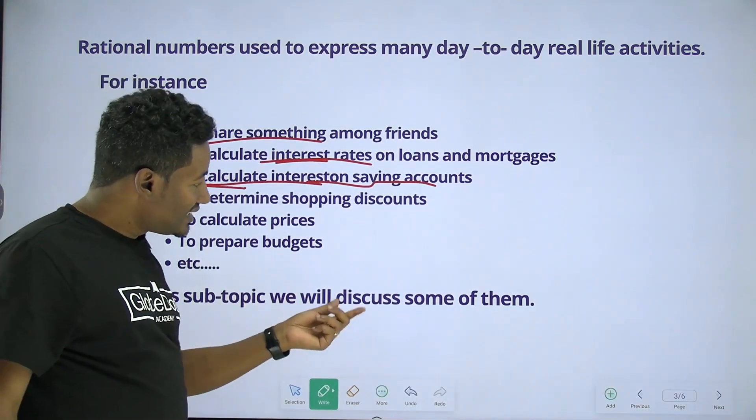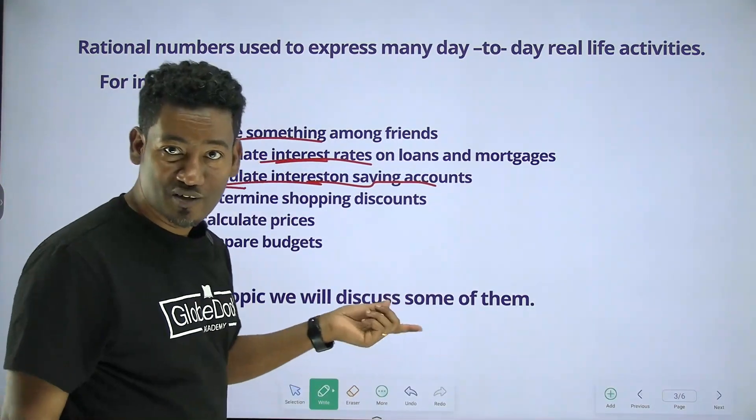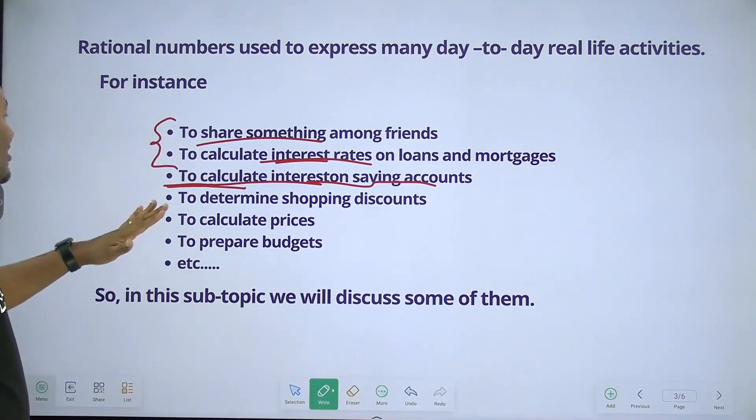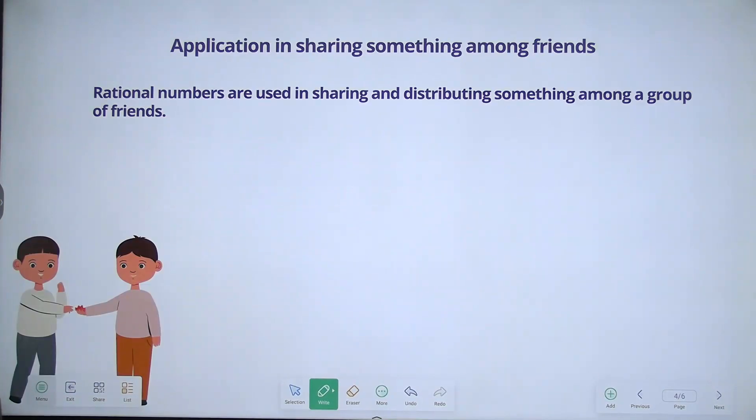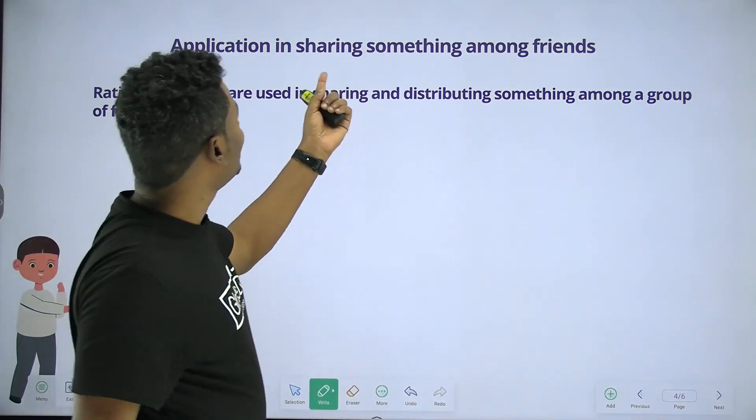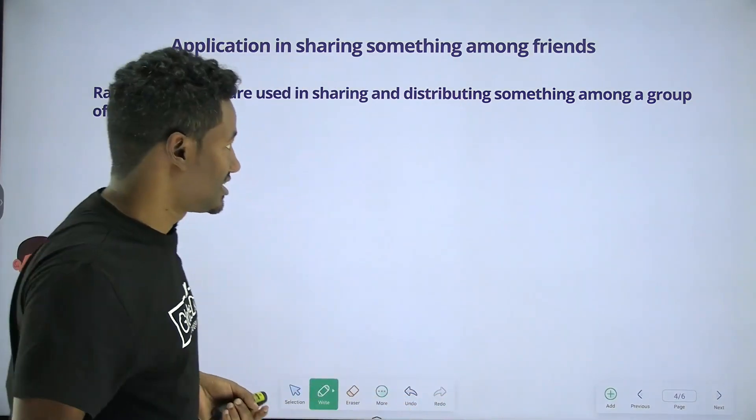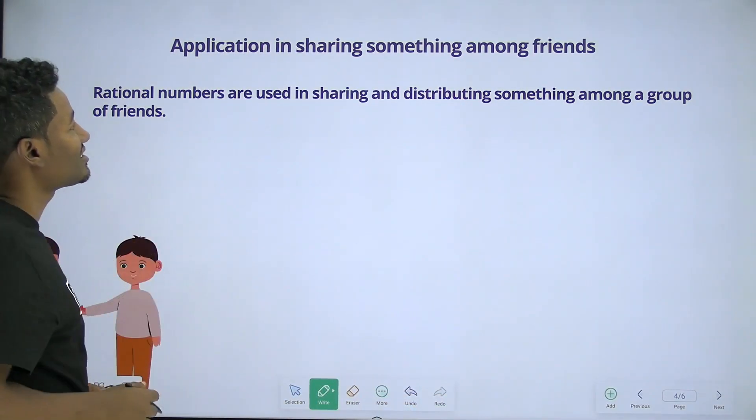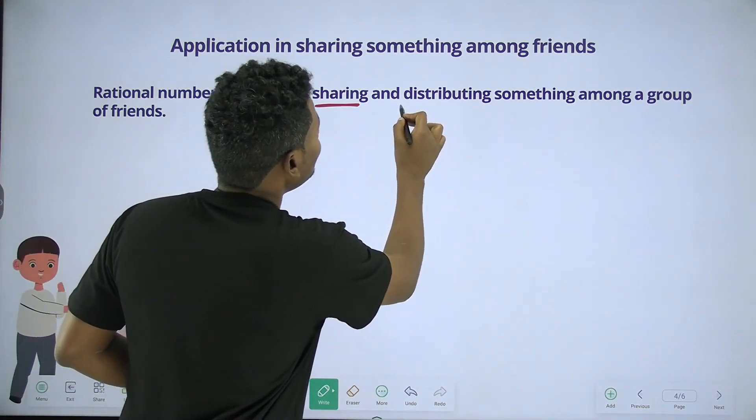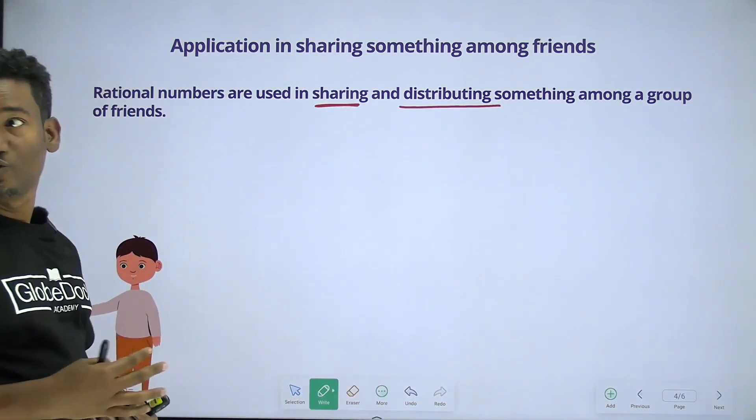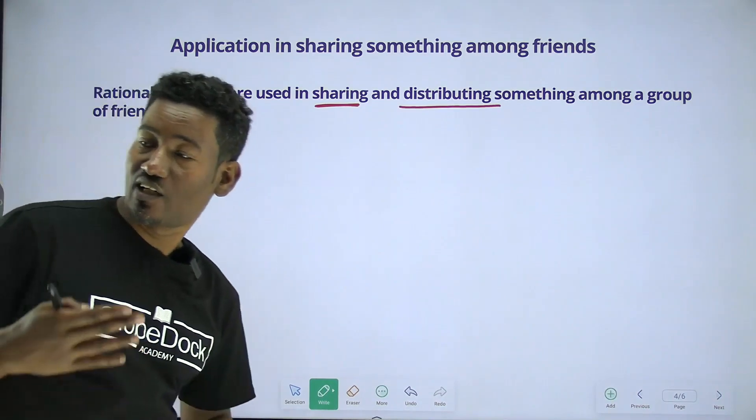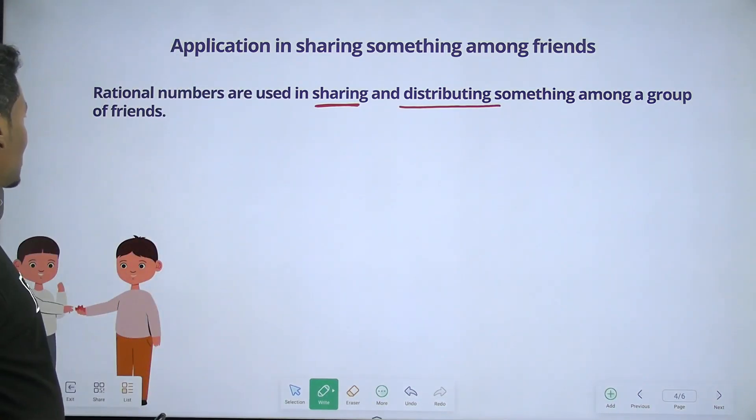In this subtopic, we will discuss some of them. We will discuss an application in sharing something among friends. The rational numbers are used in sharing and distributing something among a group of friends. For instance,